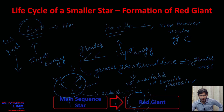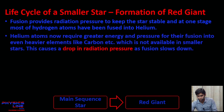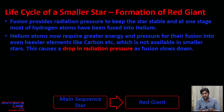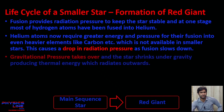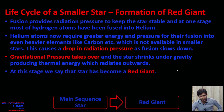Because helium nuclei are heavier than hydrogen nuclei, greater energy and pressure are needed for fusion to produce heavier elements like carbon — and this is not available in a smaller star with less gravitational force. Ultimately, the radiation pressure drops and gravitational pressure takes over, causing the star to shrink under gravity and produce thermal energy that radiates outwards to the outer core. At this stage, the star has become a red giant.